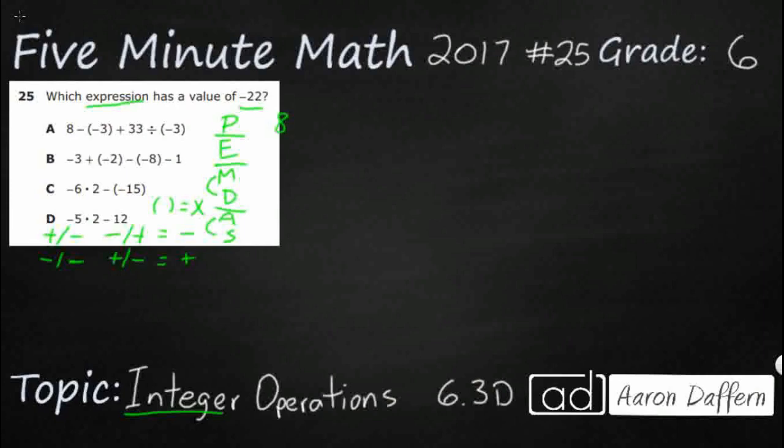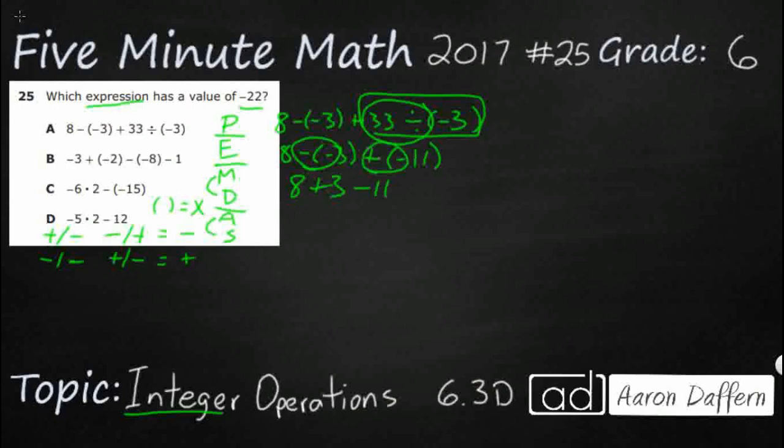Let's take this 8 minus negative 3 plus 33 divided by negative 3. There's no parentheses with multiple things in there, no exponents. We're going to look at multiplication and division. We've got that 33 divided by that negative 3. So, it's going to be 8 minus negative 3 plus, and let's just simplify that, 33 divided by 3 is 11. So, 33 divided by negative 3 is going to be negative 11. When you're minusing a negative, remember two negatives make a positive, that's really 8 plus 3. And then, a positive and a negative make a negative minus 11. So that's 11 minus 11. That makes 0. That is not what we're looking for.